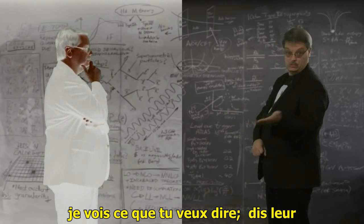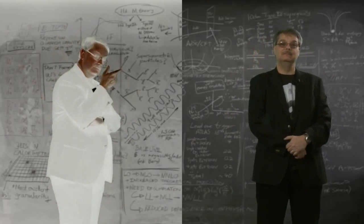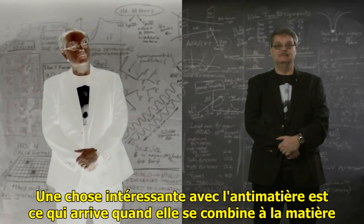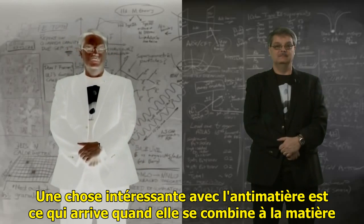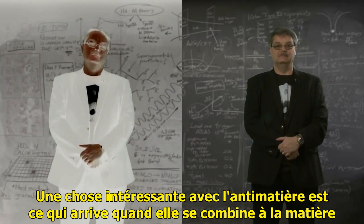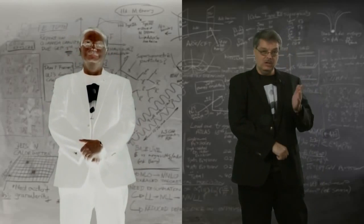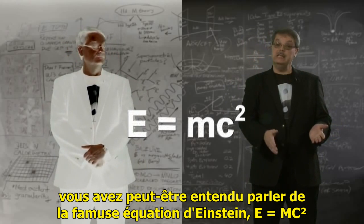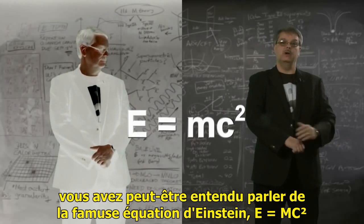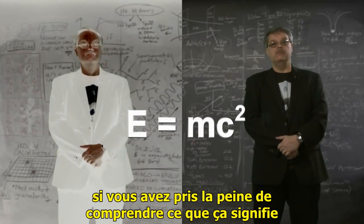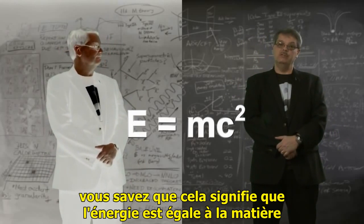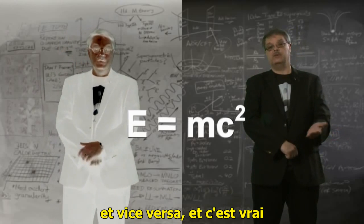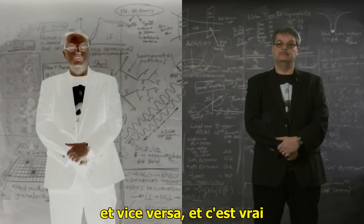I see what you mean. So tell them about it. One interesting thing about antimatter is what happens when it combines with matter — that's when things get exciting. You've probably heard Einstein's famous equation E equals mc squared. If you've cared to dig into what it means, you've heard that it means that energy is equivalent to matter and vice versa. And that's true.